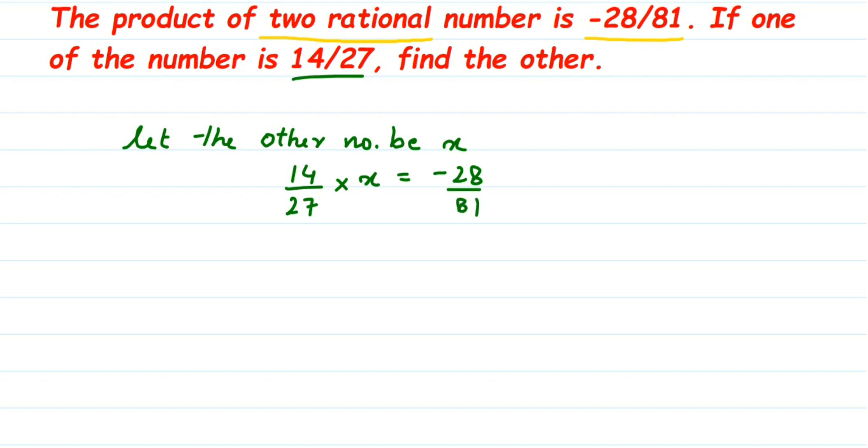Now let us transpose. Now you can see it is like 14 into x, right? x is in the numerator. So 14 into x will be 14x. So 14x by 27 is equal to minus 28 by 81.